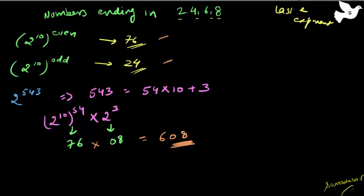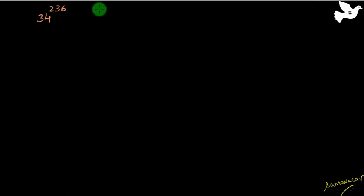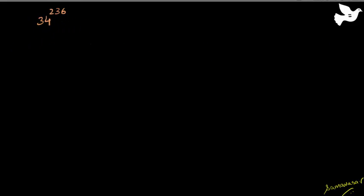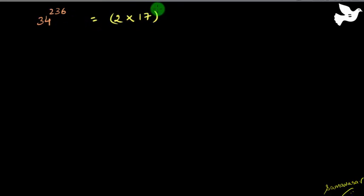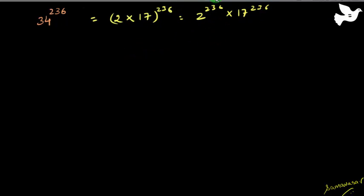We will now use this in a more difficult question — finding the last two digits of 34 raised to the power 236. This is one of the most difficult questions in the video series, so pause and try it yourself. Now 34^236 can be written as (2×17)^236, which equals 2^236 × 17^236. We know how to find the last two digits of 2 raised to something.